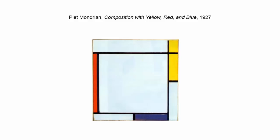This is Piet Mondrian's Composition with Yellow, Red and Blue from 1927. Mondrian actually painted flowers — a little-known fact — and has some gorgeous watercolours of amaryllis and lilies. But he was a contributor to De Stijl, a Dutch art movement that started around 1917, where artists and architects came together. Mondrian developed a non-representational art form called neoplasticism, with the goal of pure abstraction.